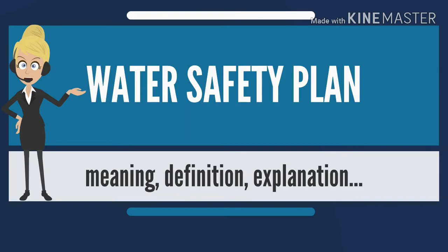Water safety plans are considered by the WHO as the most effective means of maintaining a safe supply of drinking water to the public. Their use should ensure that water is safe for all forms of human consumption and meets regulatory water standards relating to human health. Consumption includes not only drinking per se, but also other forms of ordinary contact, such as bathing, dishwashing, and inhaling aerosolized water droplets.